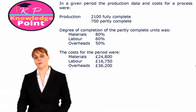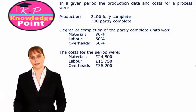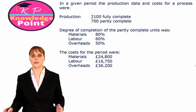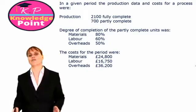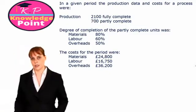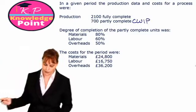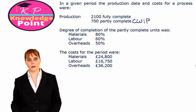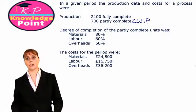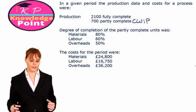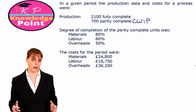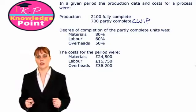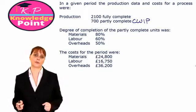In this exercise, we are given information for a particular period for a company. We are told that in this period they have fully completed 2,100 units — that is their output to finished goods — and they have partially completed 700 units, which is our closing work in progress. The degree of completion of our closing work in progress is 80% complete for materials, 60% complete for labor, and 50% complete for overhead costs. As we go through our three steps, we will take into consideration the different percentage completion for each of the three cost types.